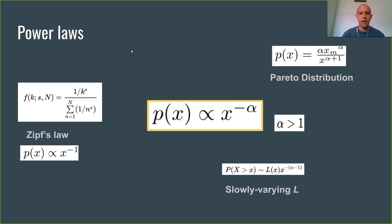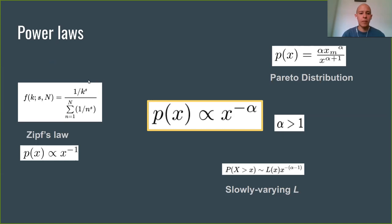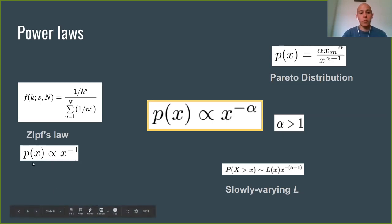Zipf's law was an empirical finding in the last century in linguistics. Zipf found that the frequency of words decayed in an inversely proportional manner. Of course, this is a harmonic series, so if the exponent is one — which was the original Zipf's law — then this diverges, so it is delimited to a range of values. More generally speaking, when you talk about Zipf's law, you talk about the specific relationship where the probability is just inversely proportional to x.